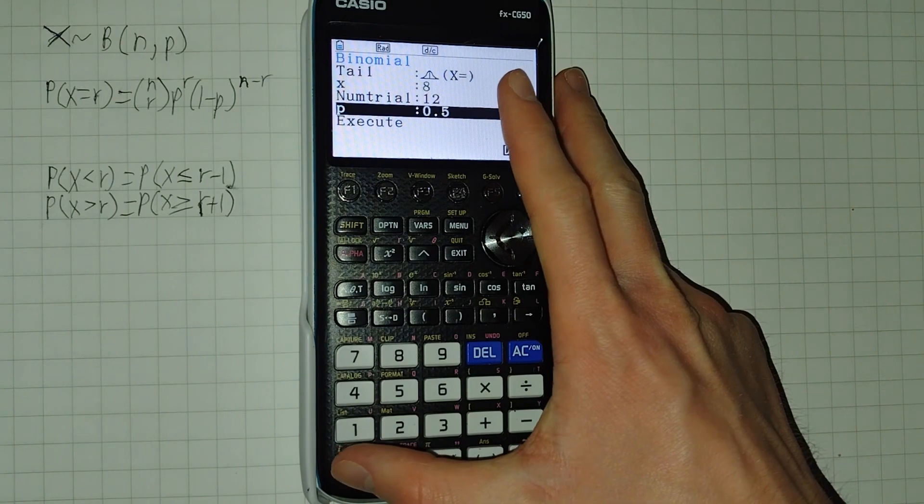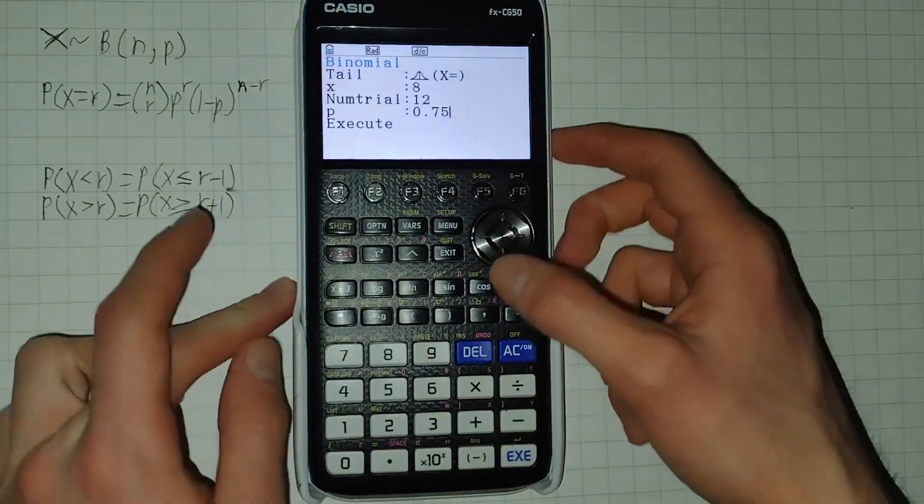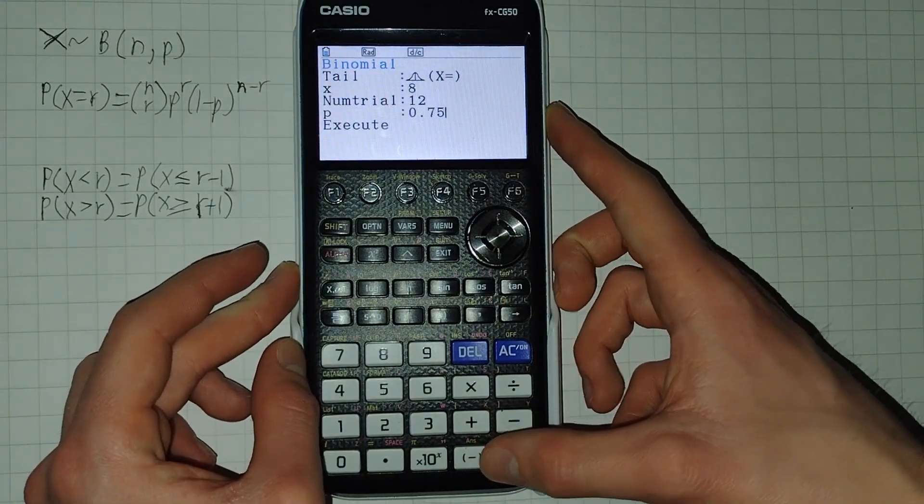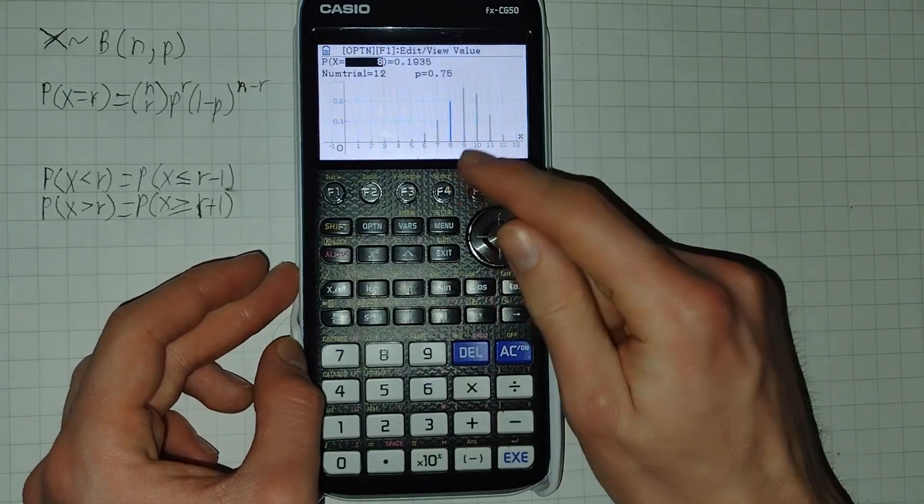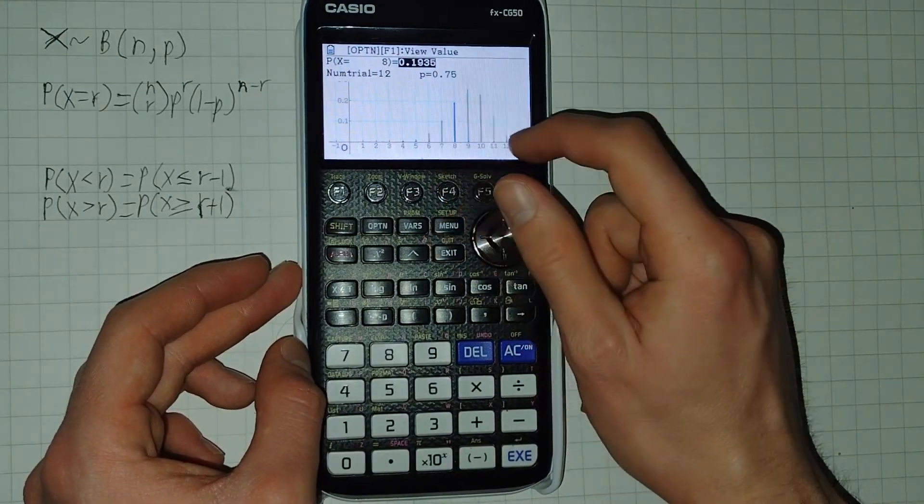If we now have a weighted coin, an unfair coin, and the probability of heads is 0.75, and we want to know the probability of it being 8 heads, we can run that again. And now we can visually clearly see how the distribution is skewed.